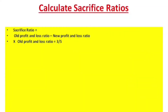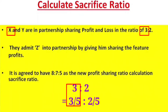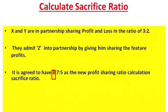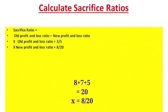X's old profit and loss ratio is 3 by 5 — X's ratio is 3, total ratio is 5, since 3 plus 2 equals 5. X's new profit and loss ratio is 8 by 20, since the total of X, Y, and Z ratios is 20.